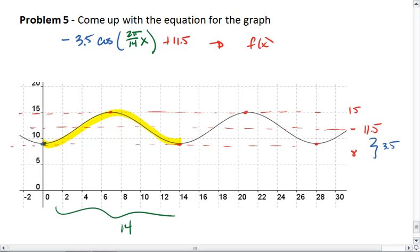Basically, we just got f(x) equals negative 3.5 cosine, π over 7x, plus 11.5.